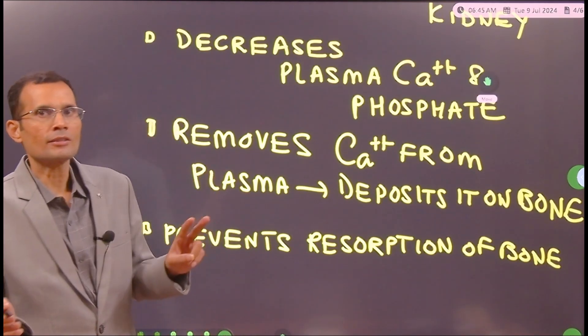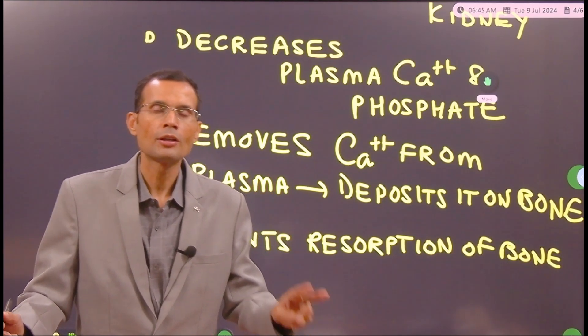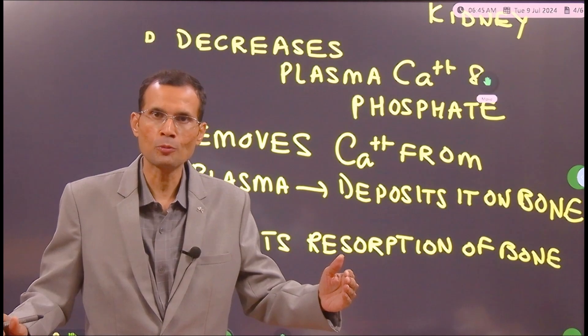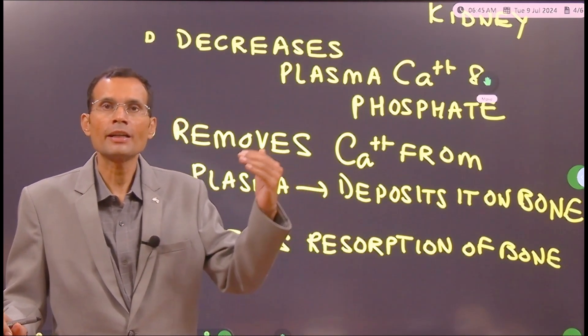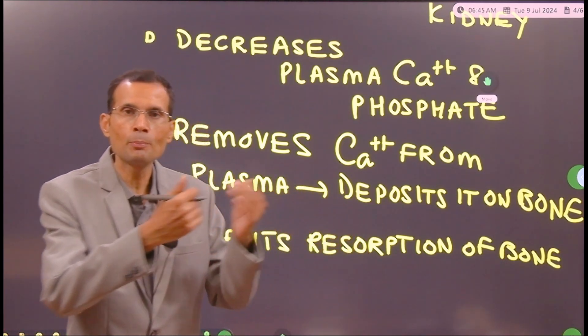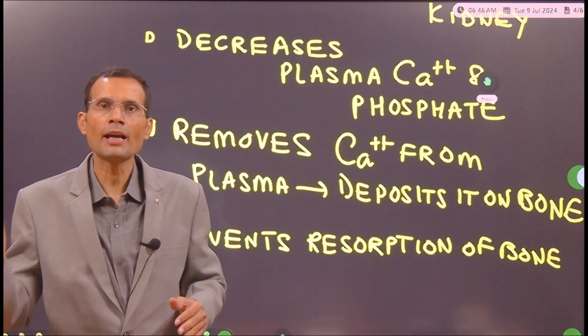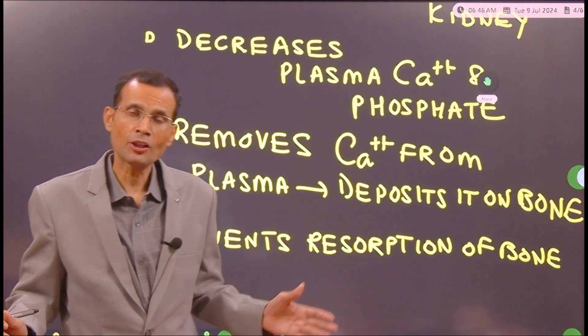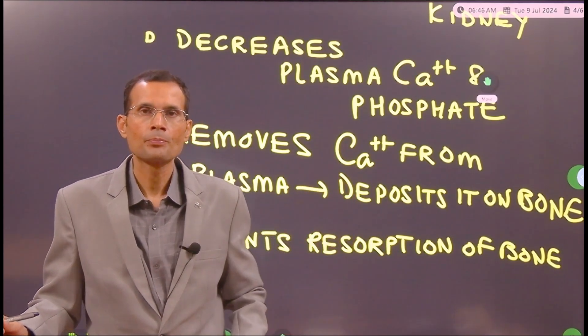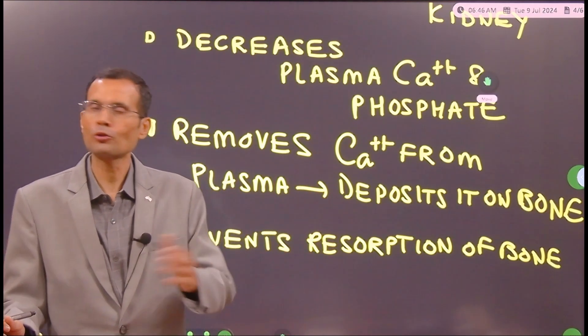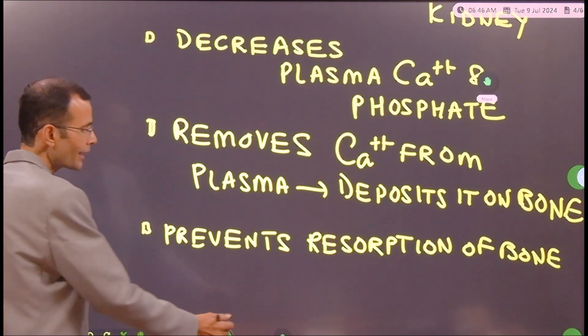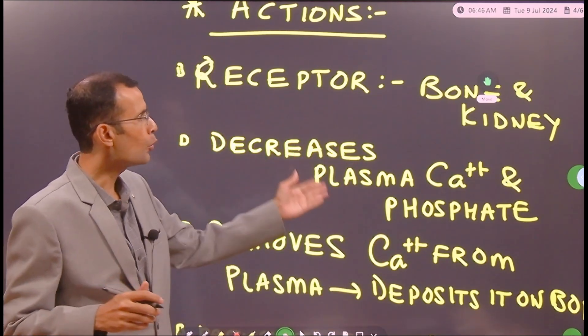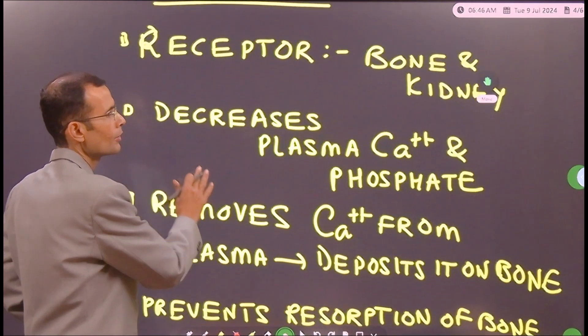It acts at two places. Calcitonin action occurs at two places - bone and kidney. Parathyroid hormone, since we are calling it an anti-PTH hormone, increases plasma calcium by removing calcium from bone and putting it into blood. Calcitonin has exactly the opposite action - it removes calcium from plasma and deposits it on bone. PTH also acts on kidney and GIT. Calcitonin has action on kidney but not so much on digestive tract. So basically calcitonin acts at two places - its receptor is at two places, bone and kidney. It decreases plasma calcium and phosphate.